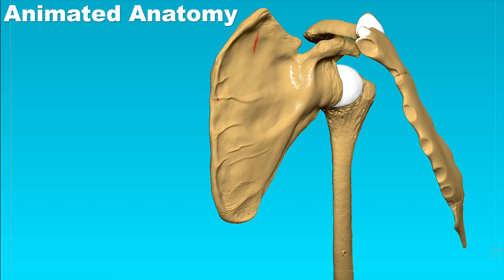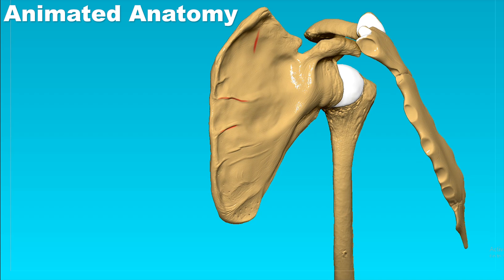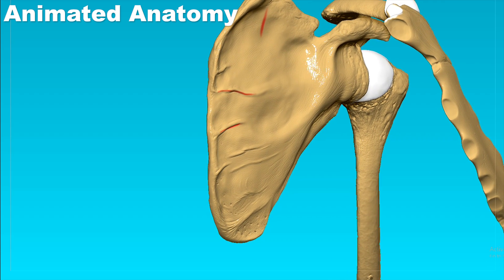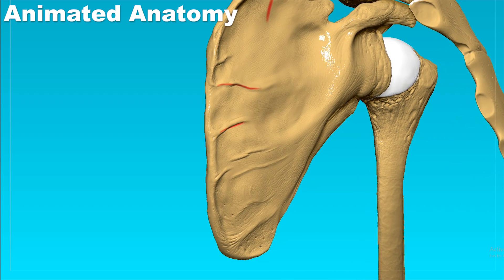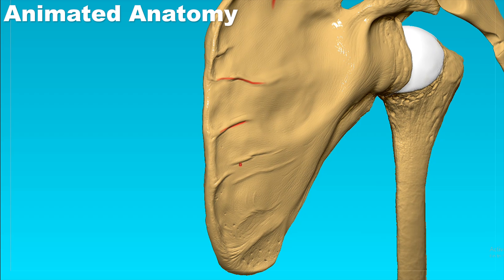On this surface we can also see fine ridges, and those are for the tendinous insertions of the muscles right here as well.